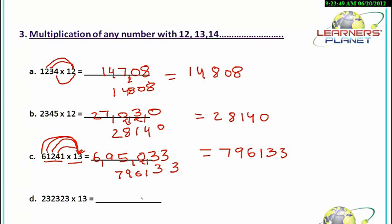Now let's see this example, 232323 into 13. Similarly, at the units place, 3 times 3 is 9. Then 2 times 3 is 6 plus 3, 9. Then 3 times 3 is 9 plus 2, 11. Then 2 times 3 is 6 plus 3, 9. Then 3 times 3 is 9 plus 2, 11. Then 2 times 3 is 6 plus 3, 9. And 2 as it is.